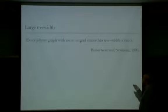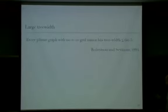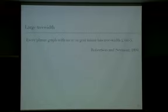If the treewidth is large, you want to find a smaller equivalent instance. Every planar graph with large treewidth has a large grid minor. So if the treewidth is large, you have a large grid minor.